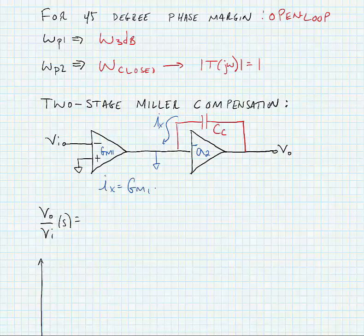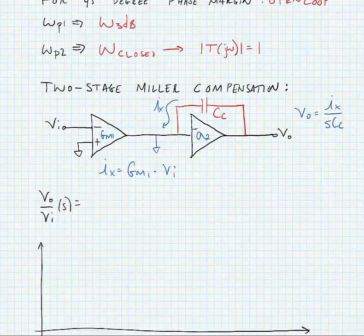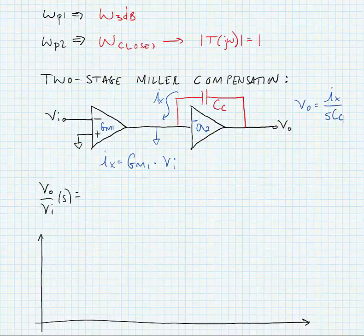We know that the output voltage v_out is equal to i_x times the capacitive impedance, which is 1 over s*Cc. So if we put this all together, we find that our output over input with respect to frequency is gm1 divided by s*Cc.